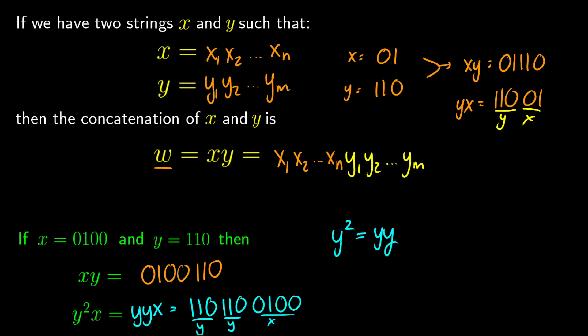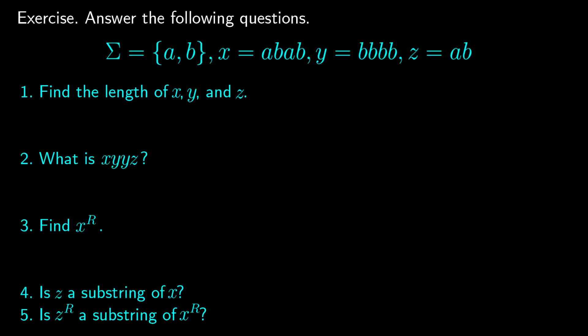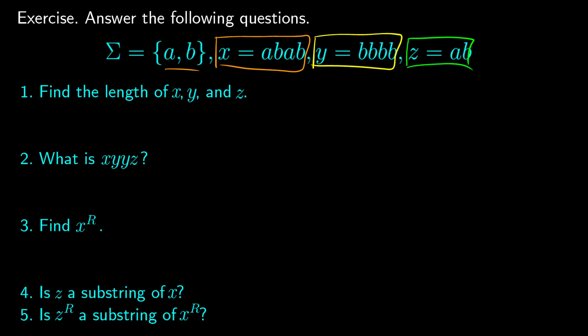Now here's a practice question to put everything together. The alphabet is {a, b}. We have string x = a, b, a, b; string y = b, b, b, b; and string z = a, b. First, find the lengths. x has 4 symbols, so |x| = 4. y also has 4 symbols, so |y| = 4. z has 2 symbols, so |z| = 2.